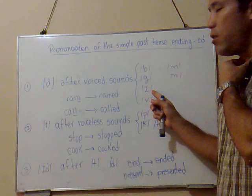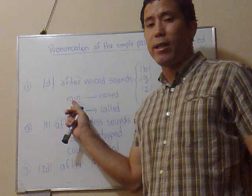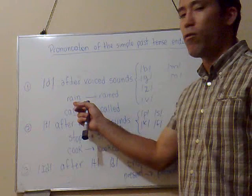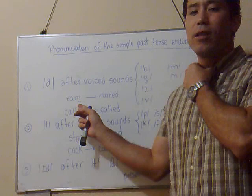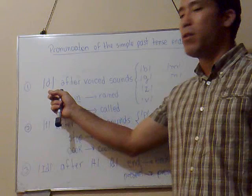For example, when we have the verb rain and we want to pronounce it in the simple past tense and we don't know which pronunciation to use, we touch our throats and pronounce the last sound of the verb. N is voiced, so the pronunciation must be rained.